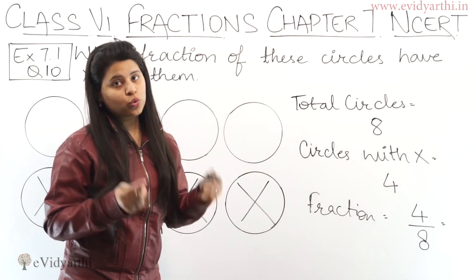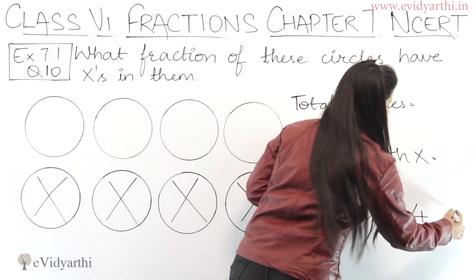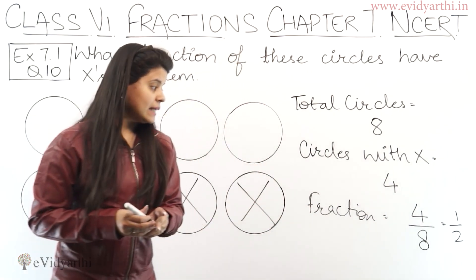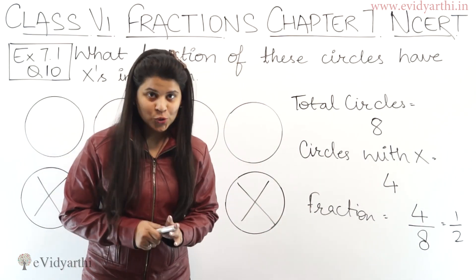So 4 and 8, both are divisible by 4. So 4 into 1 is 4 and 4 into 2 is 8. So we can write 4 upon 8 as 1 upon 2.